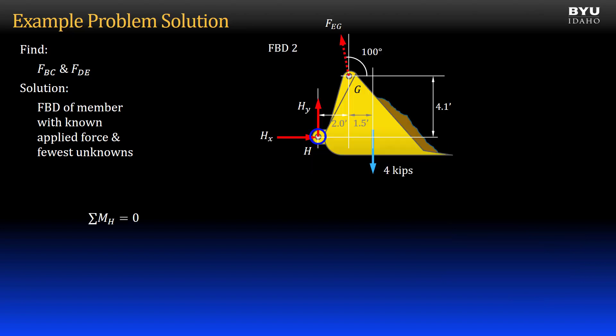I will first sum moments about point H to get force EG. The easiest way to handle the angle of force EG is to divide the force into horizontal and vertical components. My moment equation then has the horizontal component, FEG, times the sine of 100 degrees minus 90 degrees, which is 10 degrees, times its moment arm, 4.1 feet. It is positive by the right-hand rule.